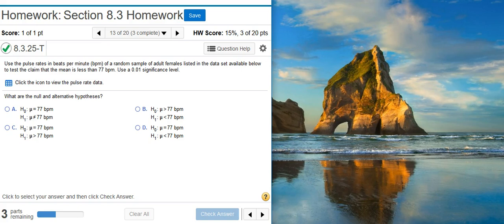Here's our problem statement. Use the pulse rates in beats per minute of a random sample of adult females listed in the dataset available below to test the claim that the mean is less than 77 beats per minute. Use a 1% significance level.